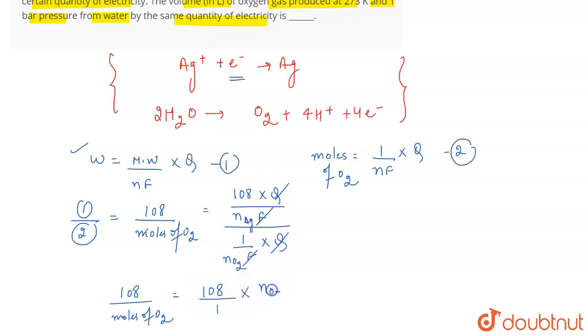This will be equal to 108 divided by... what are the number of electrons involved? Now, this will be number of... NO2 means the number of electrons involved in O2. And what are the number of electrons involved in O2? The number of electrons involved in O2 are 4. This is 4.